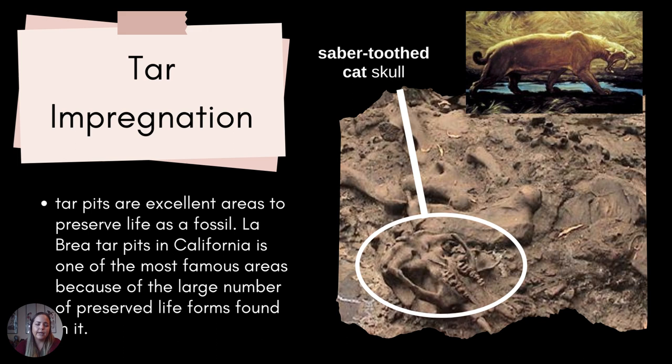With tar impregnation, this occurs where there is some sort of tar in the ground that has actually seeped into the hard parts of the skeleton and preserved those pieces, basically replacing it with tar. This is really common in California, especially Southern California, where we have the La Brea Tar Pits in Los Angeles. The La Brea Tar Pits are a huge area where there are these big pits of tar — they're still there.